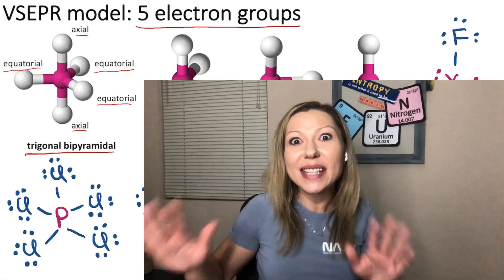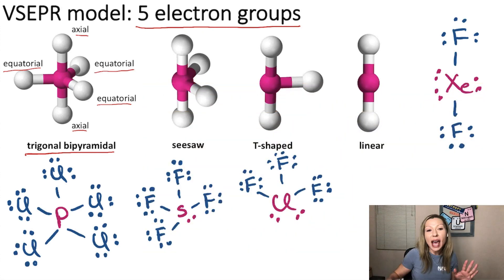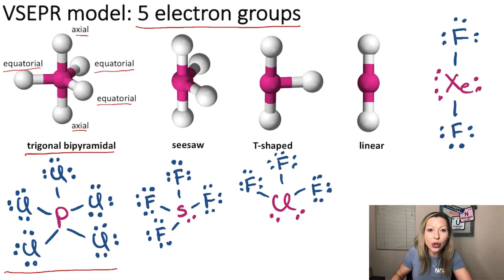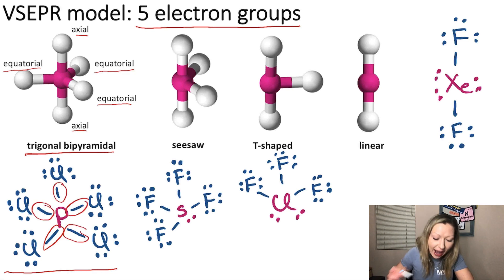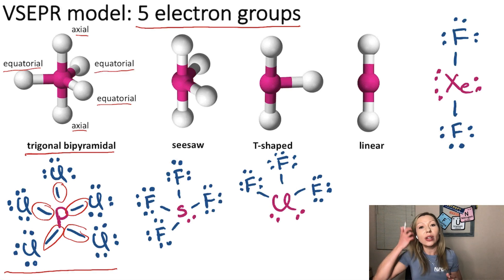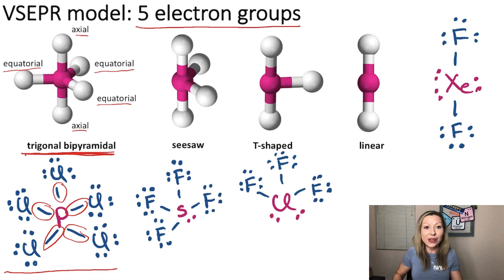Let's take a look at some examples. When we have phosphorus pentachloride, which is shown right here, we are going to have five electron groups around the central atom. And because there are no lone electron pairs, we are going to see this trigonal bipyramidal structure.